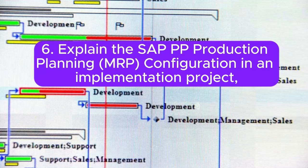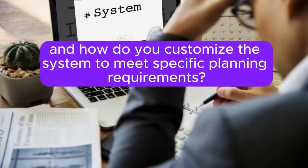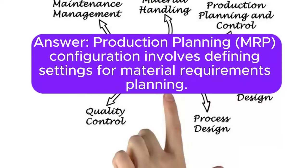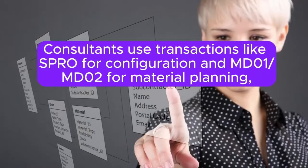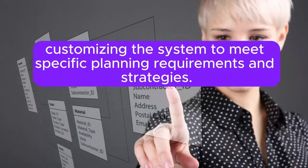Question 6: Explain the SAP PP production planning MRP/ERP configuration in an implementation project. How do you customize the system to meet specific planning requirements? Production planning MRP/ERP configuration involves defining settings for material requirements planning. Consultants use transactions like SPRO for configuration and MD01/MD02 for material planning, customizing the system to meet specific planning requirements and strategies.